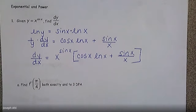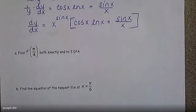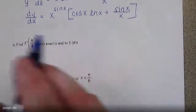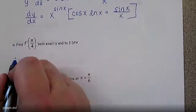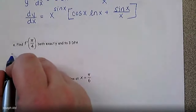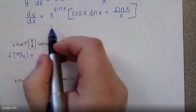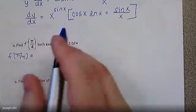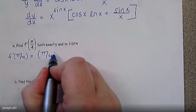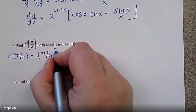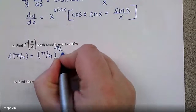The next part says find f prime of four, both exactly and to three decimal place accuracy. Since we have our expression for the derivative, let's plug in what we know. f prime of four exactly would be pi over four to the sine of pi over four power. The sine of pi over four is radical two over two.